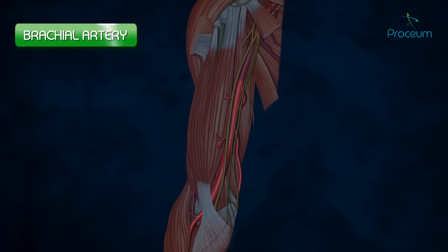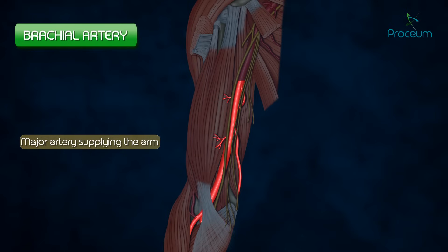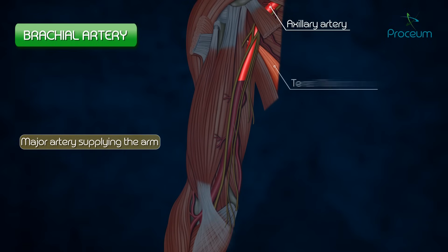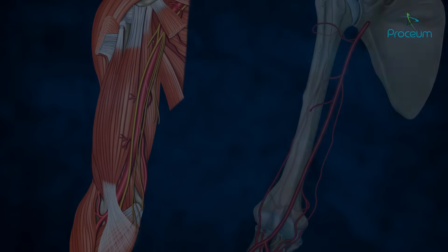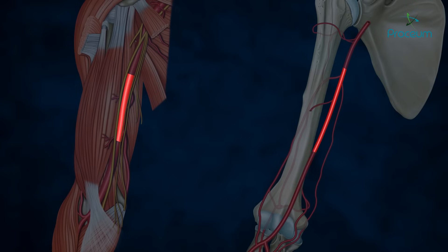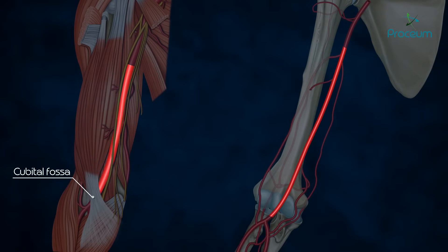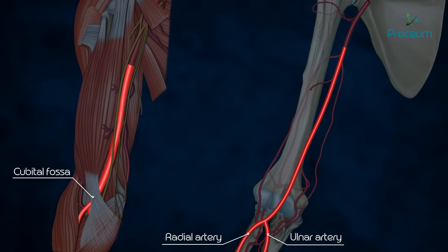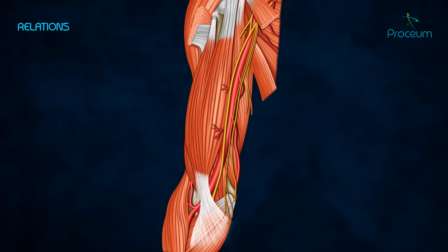The brachial artery is a major artery supplying the arm and is a continuation of the axillary artery at the inferior border of the teres major muscle. It runs downwards and laterally, crossing the elbow joint, enters the cubital fossa, and terminates by dividing into the radial and ulnar arteries at the level of the neck of the radius. Its relations are as follows.